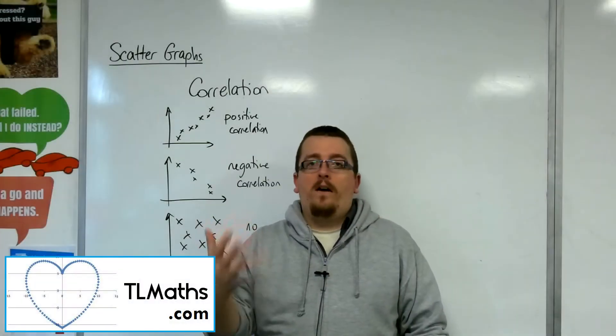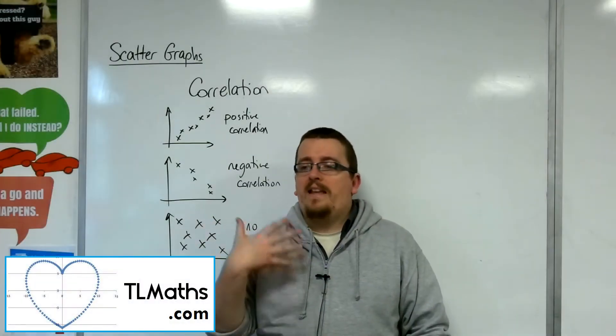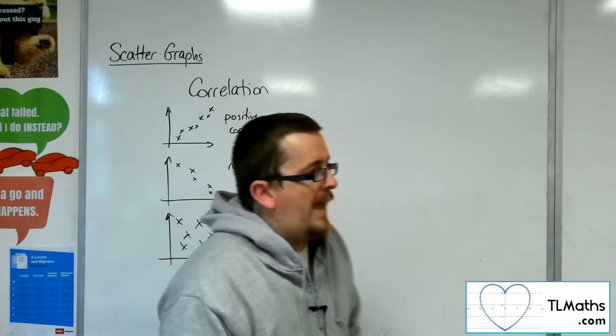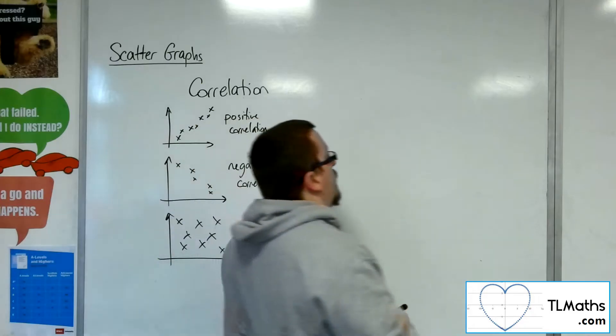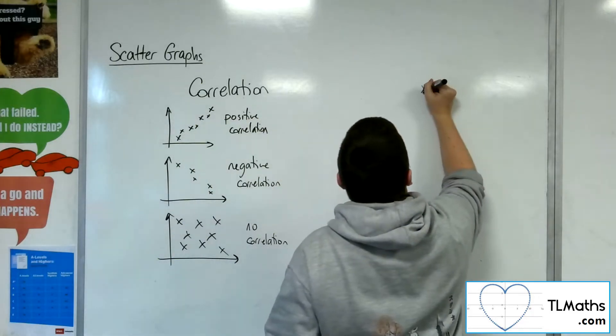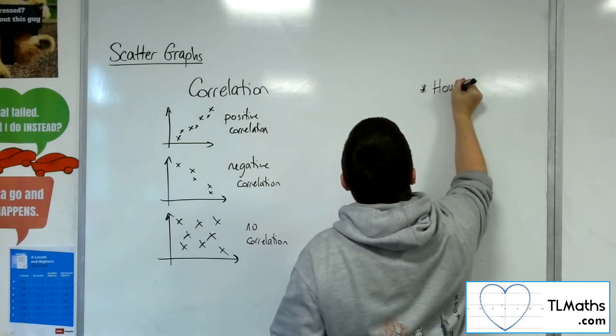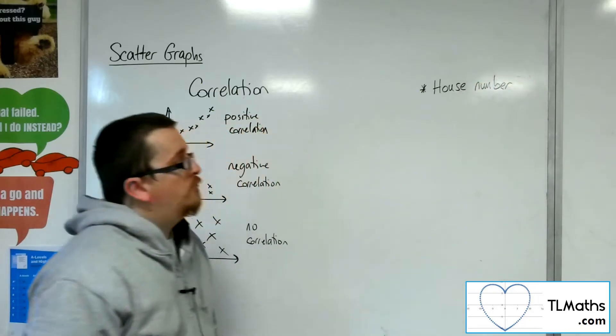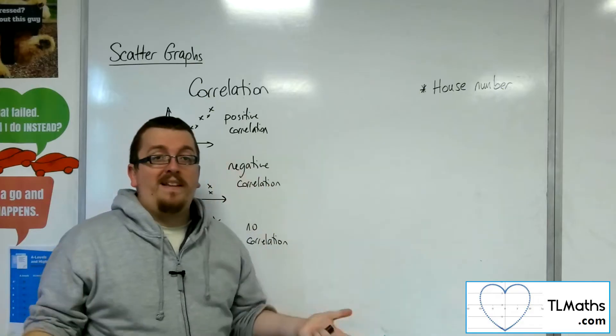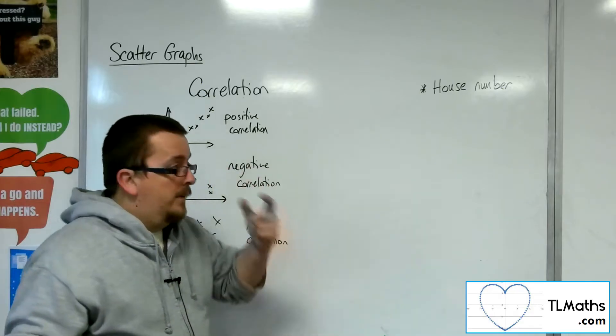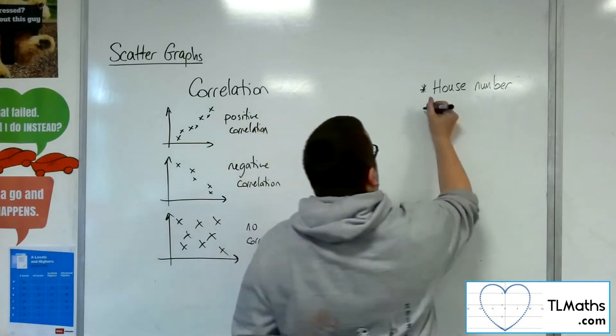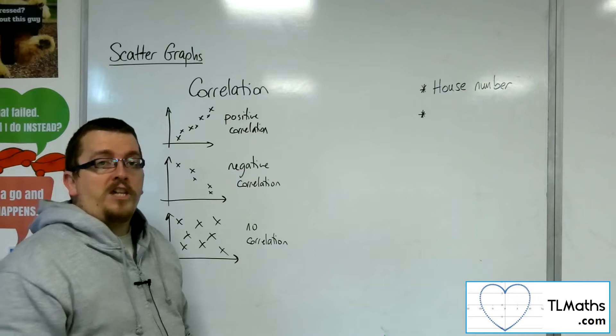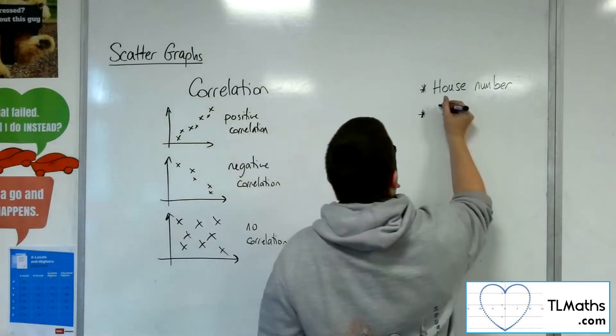Let's say I did a survey, and the two variables I was looking at were house number - a person's house number where they lived, or not even just where they live, but just their house number - and the second variable, I gave them an IQ test and took their score.